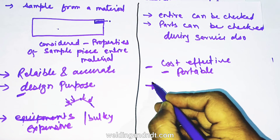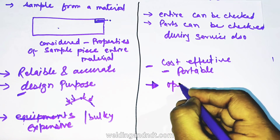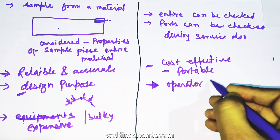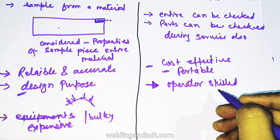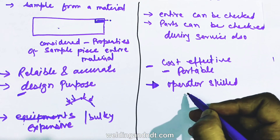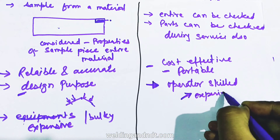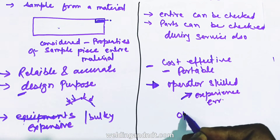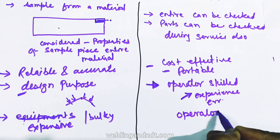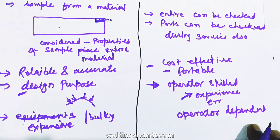The biggest disadvantage of NDT is that it requires a skilled operator. Only a skilled and experienced operator can provide reliable data. If the operator is not skilled or experienced, erroneous data may result. Hence, NDT is operator dependent — many things depend on the quality of the operator.